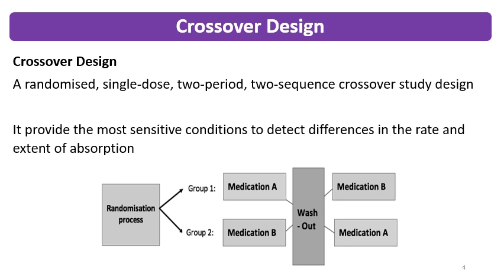Crossover design is generally done for formulations or drug molecules with a half-life of up to around 24 hours. Sometimes molecules with a higher half-life are also tested using crossover design, but for those molecules, truncated AUC is used — that is, AUC up to 72 hours.